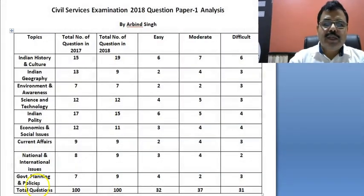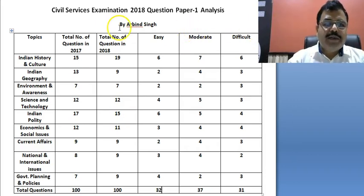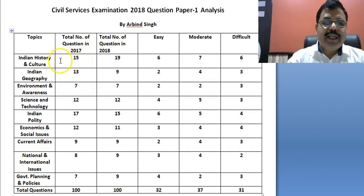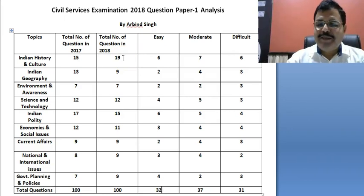This question paper is similar to the one asked in 2017, but with some changes. We will do a comparative study of 2017 versus this year across different segments. In History and Culture, they asked 15 questions last year, but this year more weightage has been given to History and Culture.